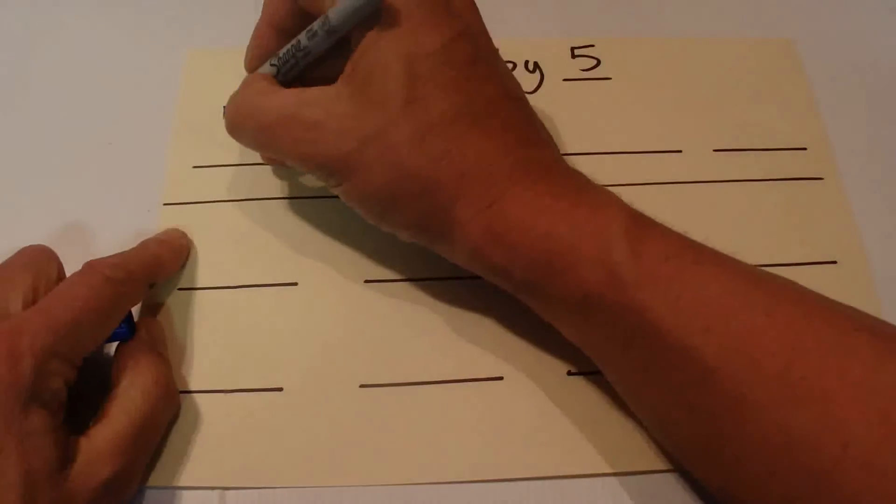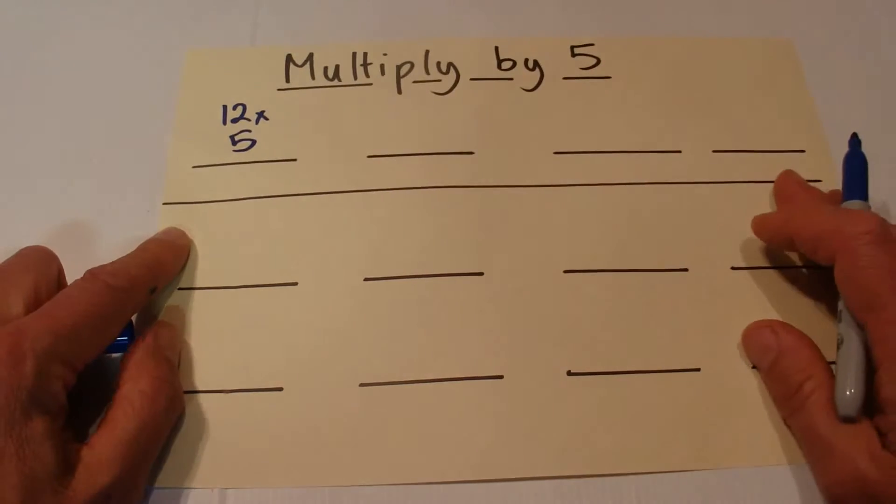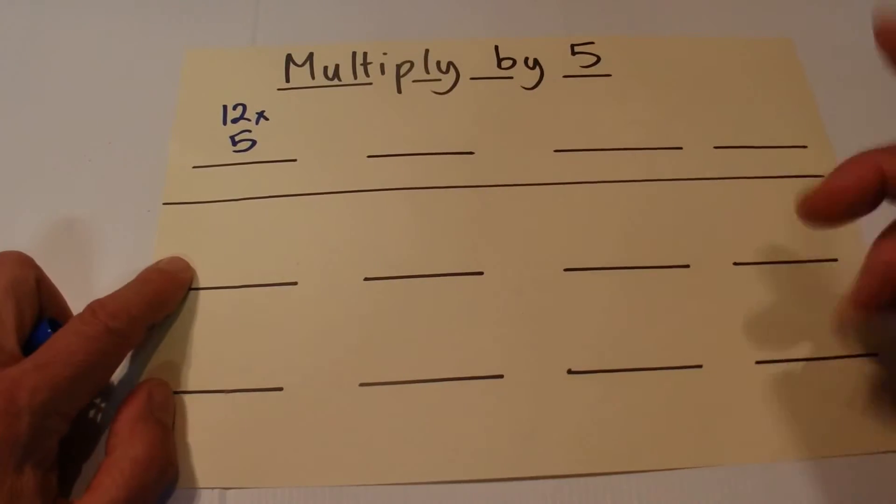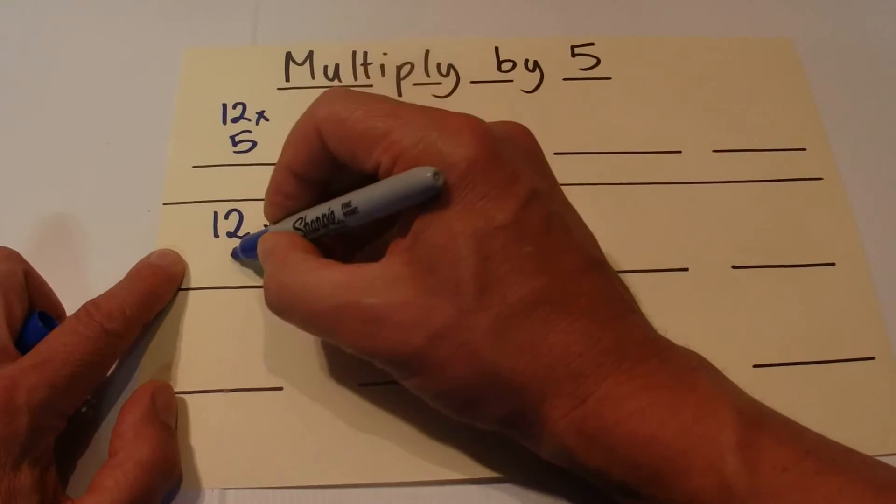I'll just show you the basic principle. The first multiplication we're going to do is 12 times 5. The basic principle is to take the initial number and halve it, which is the same as dividing by 2, and then multiplying by 10.